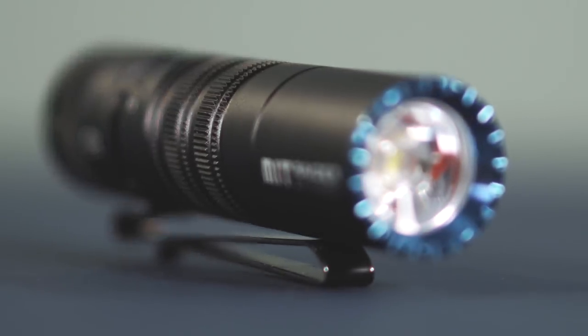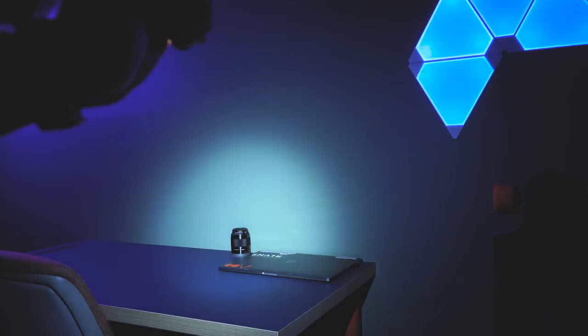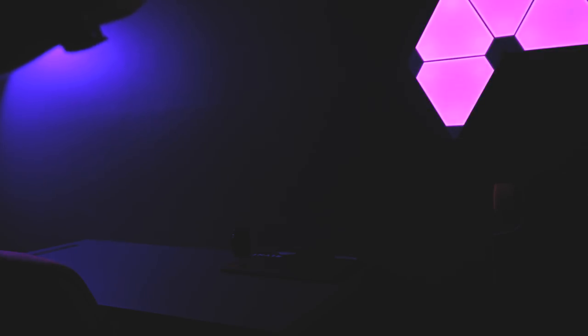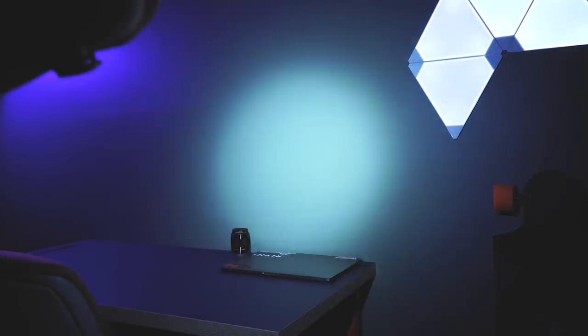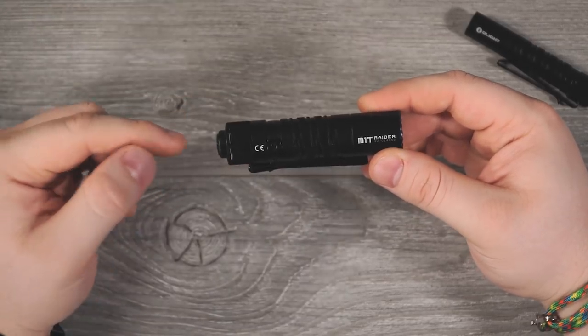The LED in this flashlight is the Luminus SST40 in cool white. That SST40 LED will give you a maximum output of 500 lumens with a 97 meter throw. You also have two modes here: low which is 5 lumens, high which is 500 lumens, and you're only going to get that for about 5 minutes and then it drops down to 300 lumens. Your run times for that is going to be 5 minutes at 500, and then once it drops down to 300 lumens that'll run for 120 minutes.